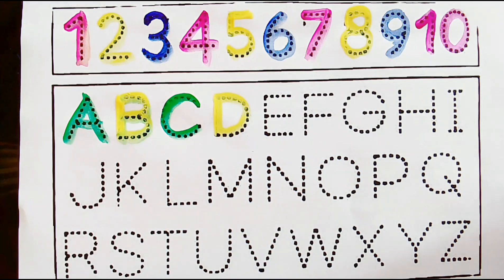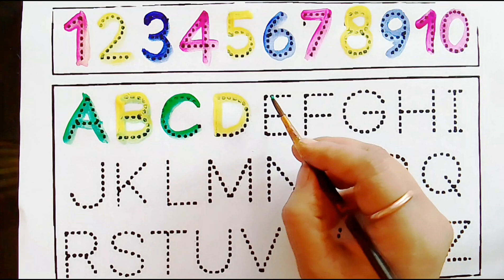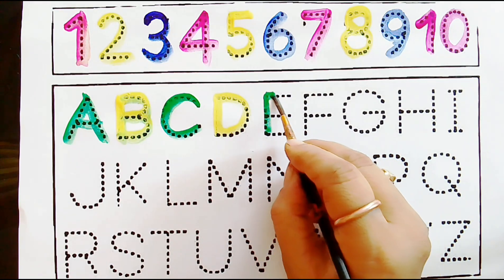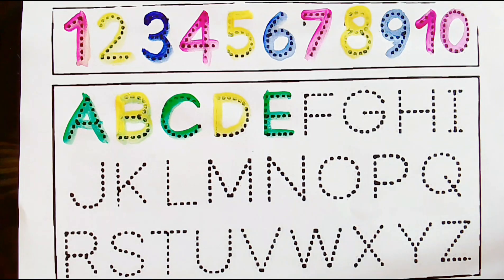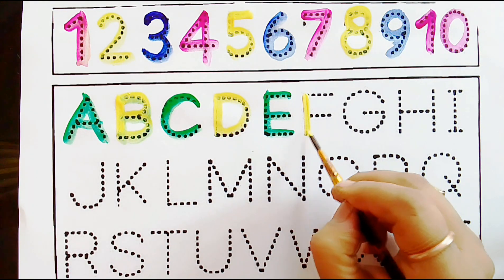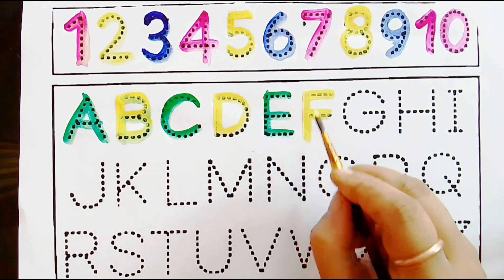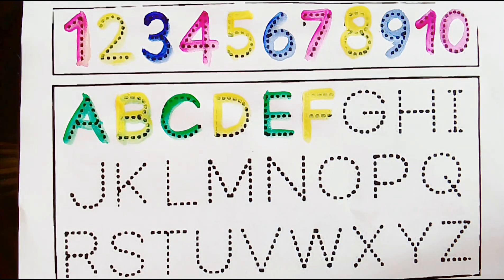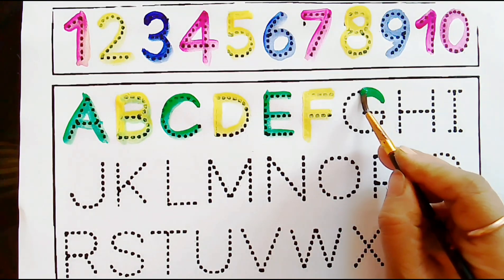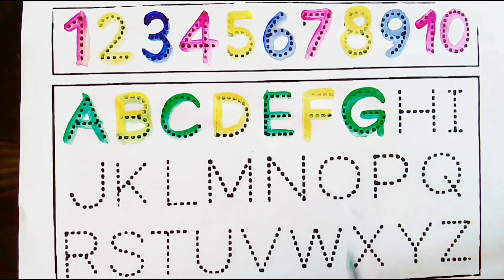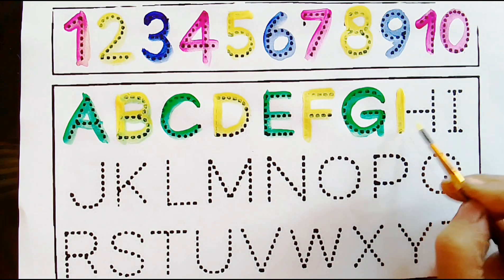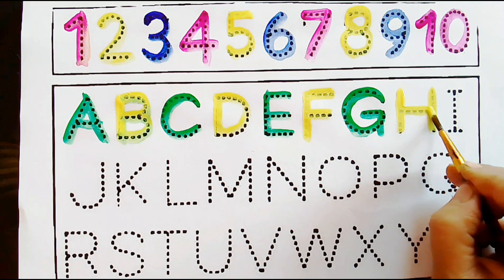E, E for Elephant. E, E. F, F for flower. F, F for flower. F. G for Goat. G for Goat. G. H, H for house. H for house. H.